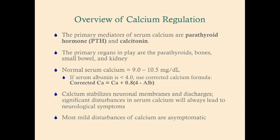The primary organs targeted by these two mediators are the parathyroids, the bones, the small bowel, and the kidney. The normal serum calcium level is 9 to 10.5 milligrams per deciliter — very tightly regulated, with only about 1.5 points of normal fluctuation.